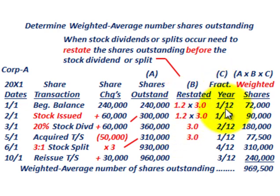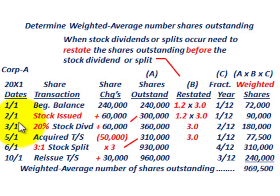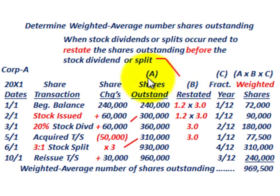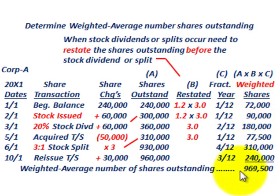We determine the fraction of the year that each group of shares was outstanding, going back to our transaction dates. Multiplying shares outstanding by any restatement factor and by the fraction of the year gives us the weighted shares for each period. We sum those up to get the weighted average number of shares outstanding.